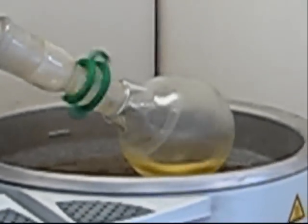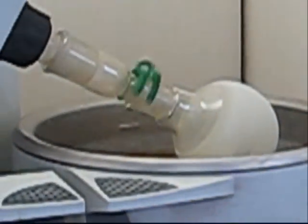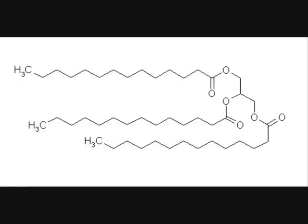The round bottom flask is rotary evaporated and the crude solid produced is recrystallized with acetone. This produces the natural product of nutmeg which is trimyristin.